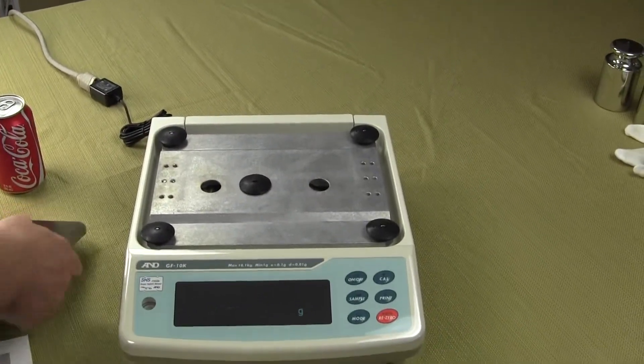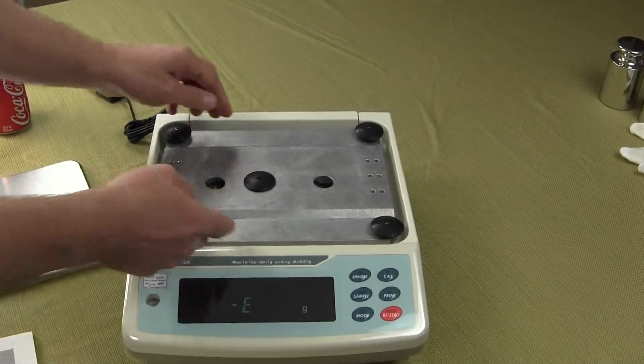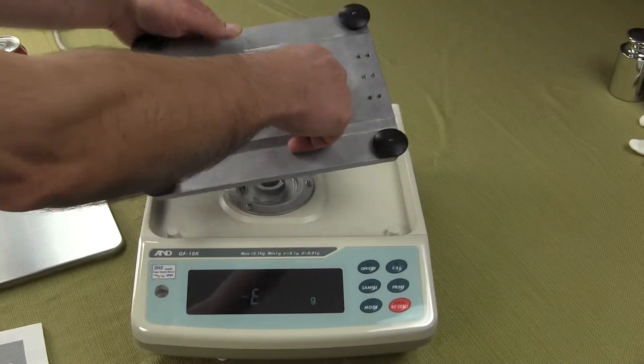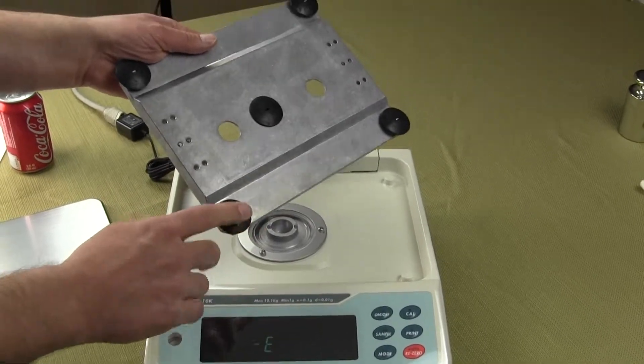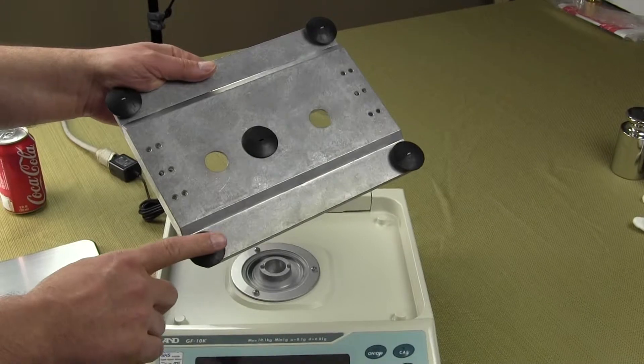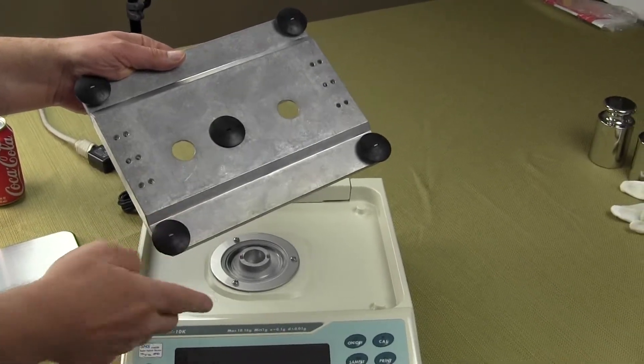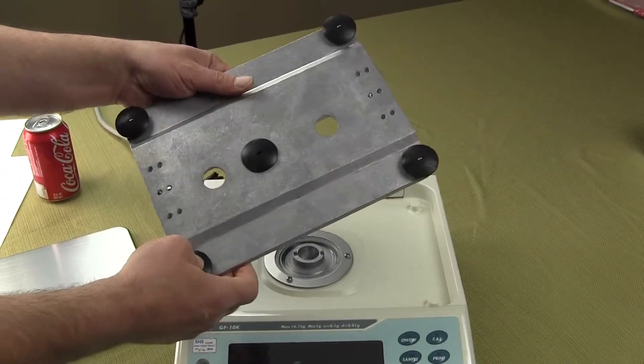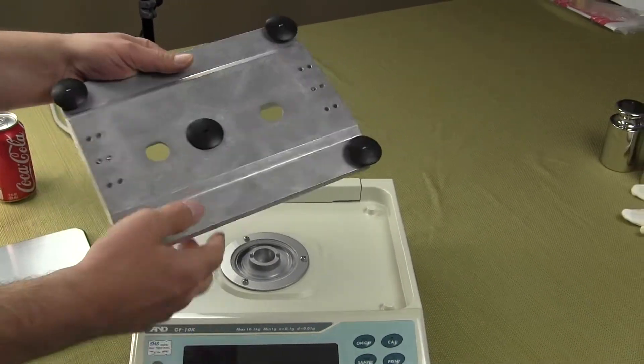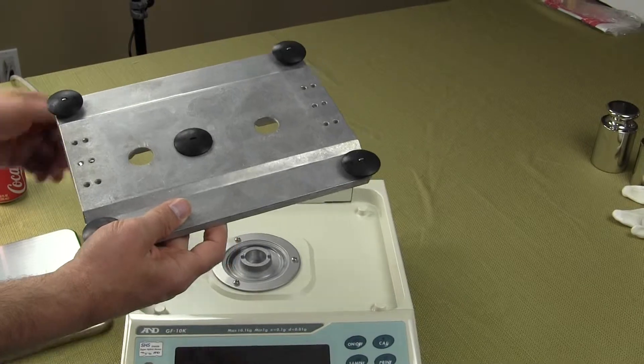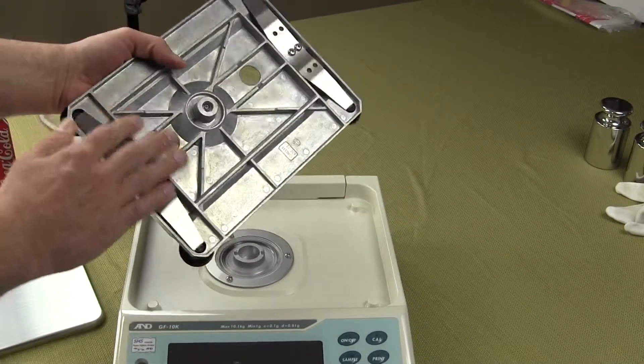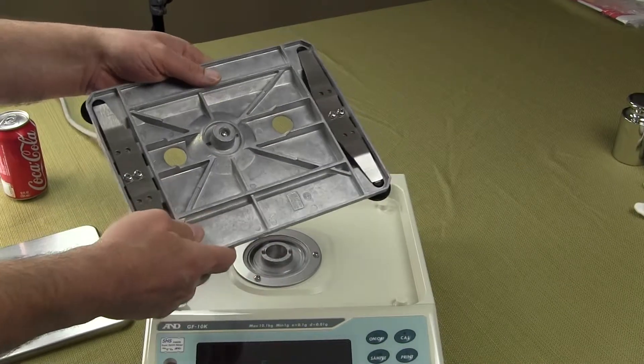Underneath the weighing platform, you have your pan support. This pan support comes right off. You'll notice the pan support has these metal tips here. Now all this is for grounding. A&D builds a top-notch balance. They don't cut any corners. Some manufacturers you'll see on the market don't even bother grounding their weighing platform. This is full of static electricity. So it's a great design. And this is all milled aluminum.